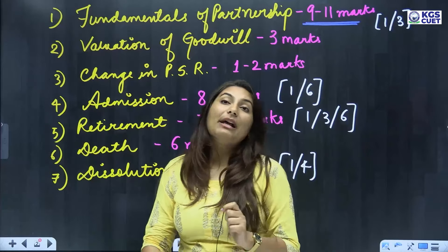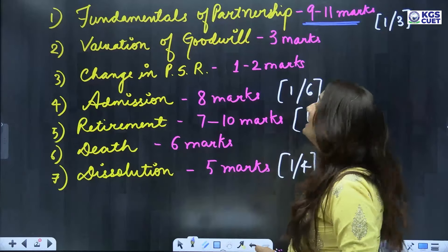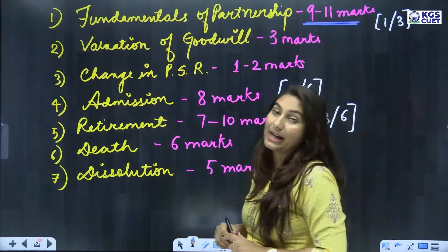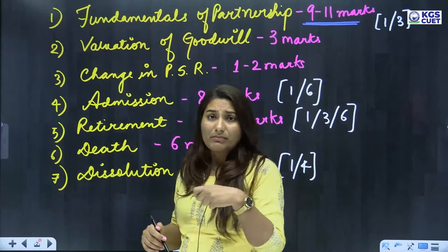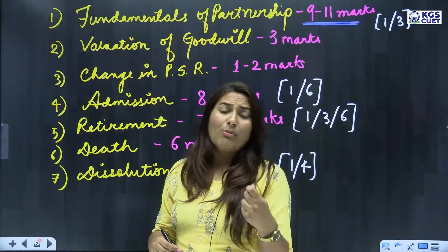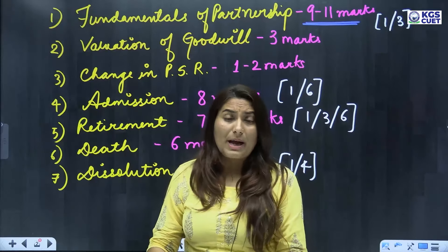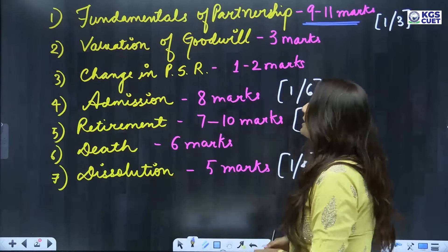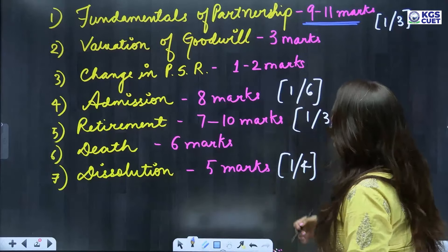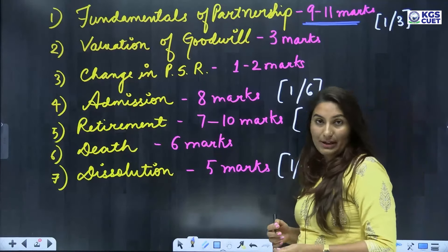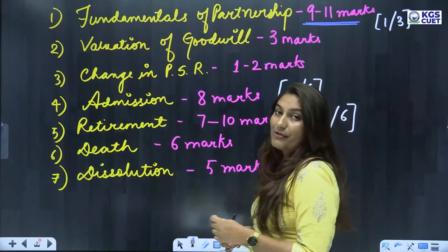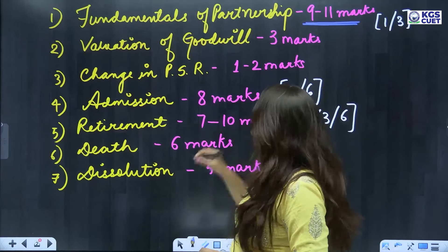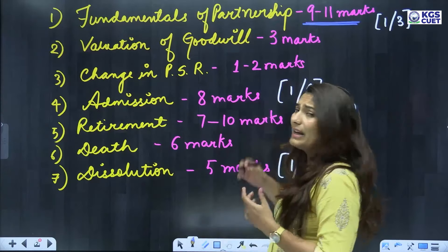Second is valuation of goodwill, which is worth 3 marks. You get questions on goodwill formulas, and questions related to profit sharing ratio — specifically questions on new profit sharing ratio — which are 1-mark questions.